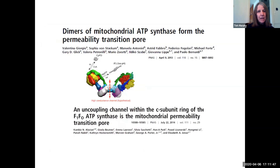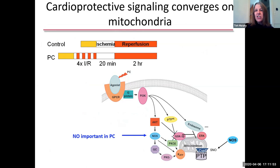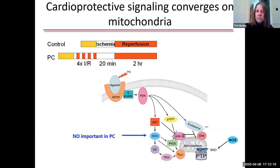Before turning this over to George, I want to give a brief introduction on how we got into studying cyclophilin D. We were studying a phenomenon known as preconditioning, where brief intermittent periods of ischemia and reperfusion protect the heart from a subsequent longer period of ischemia. If you extend the reperfusion period to 30 to 60 minutes, you lose the protection. One interpretation is that a post-translational modification generated during preconditioning is important for the protection and leads to inhibition of the permeability transition pore.